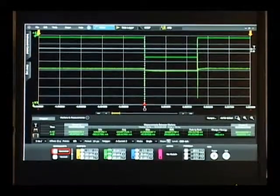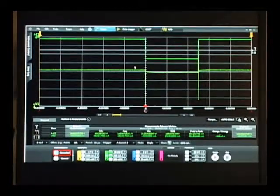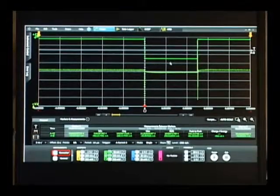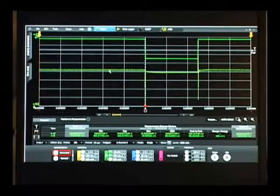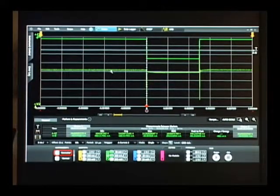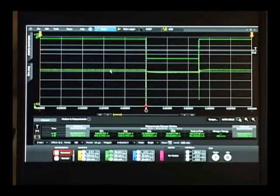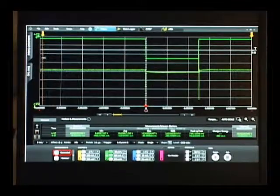What we have here on the top is our load current pulsing down to 500 milliamps of full load condition. Then we have our output voltage in response to that load condition. I need to measure the DC levels at both no load and full load condition. So we have markers for that purpose.